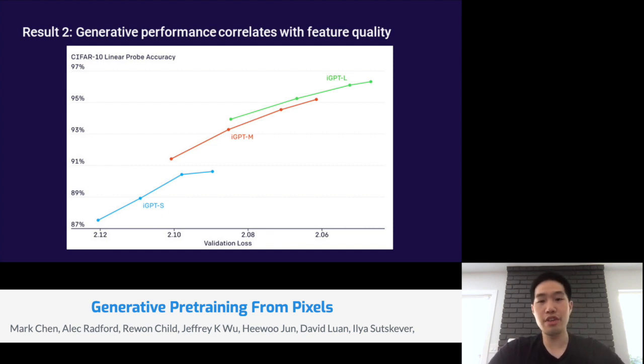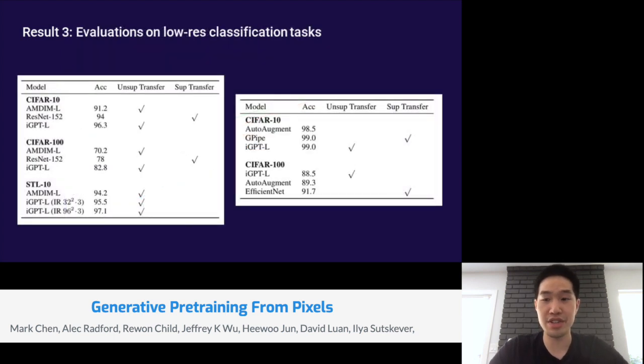Our next result is that generative performance correlates with feature quality. Here we see a different graph. On the x-axis, we have validation loss, and it's decreasing as we go to the right. On the y-axis, we have CIFAR-10 linear probe accuracy. You'll notice a few lines here, a blue line, a red line, and a green line. Each of these lines tracks a model throughout generative pre-training. These dotted markers that you're seeing are different checkpoints at steps 131k iterations, 262k iterations, 524k iterations, and a million iterations. You can see that these positive slopes suggest the link between improved generative performance and improved feature quality. We also see here that larger models produce better features than smaller models, and this may be due to the fact that the larger models can take advantage of larger width as well.